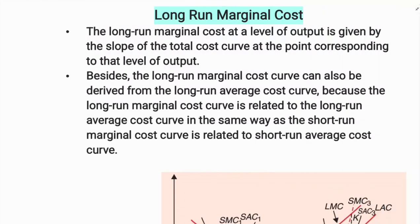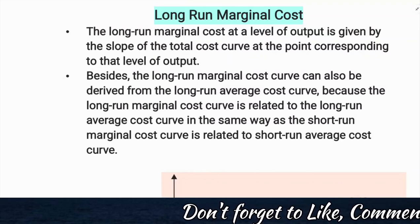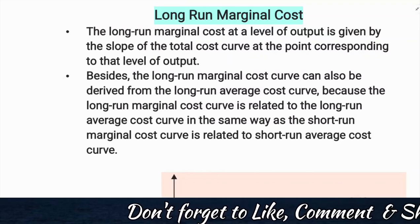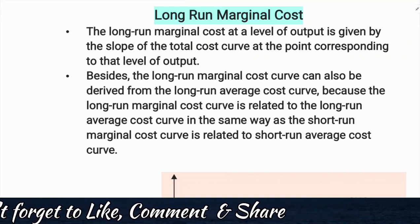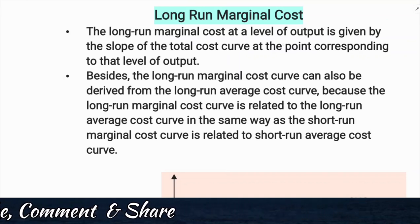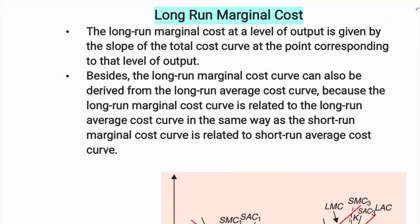In this class, we are going to discuss the long-run marginal cost curve and the difference between long-run cost and short-run cost. The long-run marginal cost curve at a level of output is given by the slope of the total cost curve at the point corresponding to that level of output.